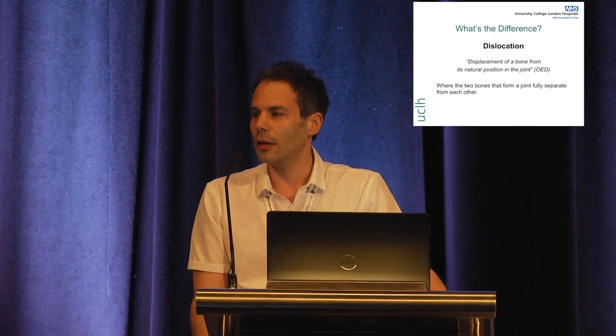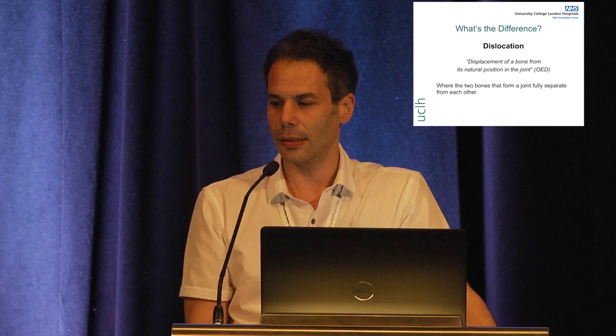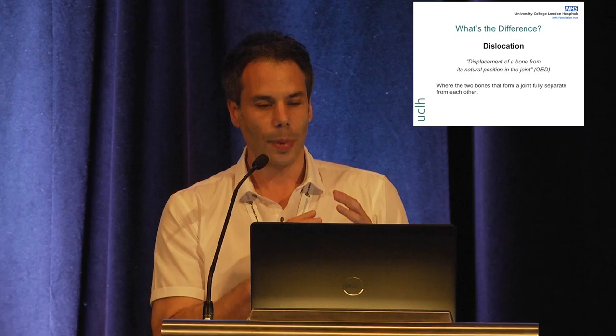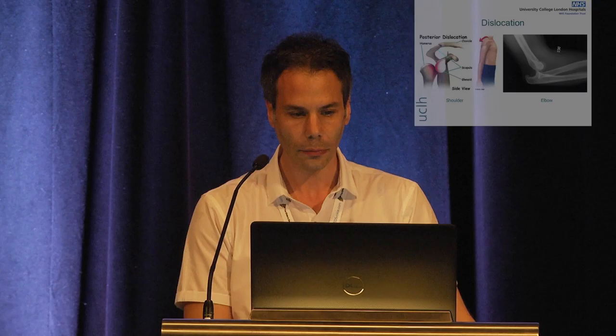A good place to start when talking about dislocations and subluxations is looking at the difference between what they are. A dislocation is a displacement of a bone — according to the Oxford English Dictionary, it's a displacement of a bone from its natural position in the joint. This is where the two bones that form a joint completely separate from each other, coming right apart.